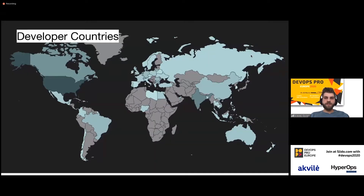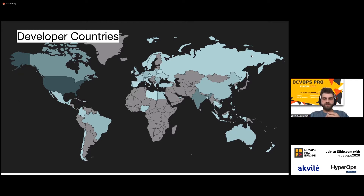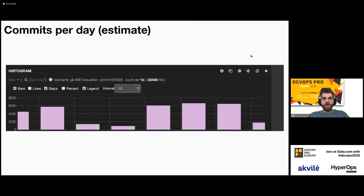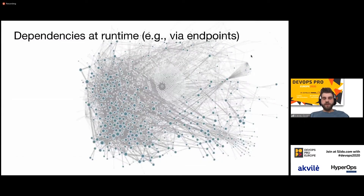When we look at the countries, these are the countries that people work from who develop for Uber. So not only is the service offering quite global, but development also happens on a global scale. This is a rough estimate of the number of commits per day on a recent timeframe — roughly one commit per developer per day, though of course this fluctuates. When we look at the number of actual services at the company, we can see a massive graph of different endpoints and APIs.